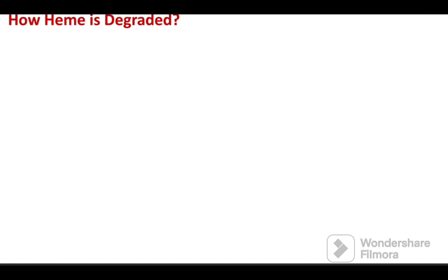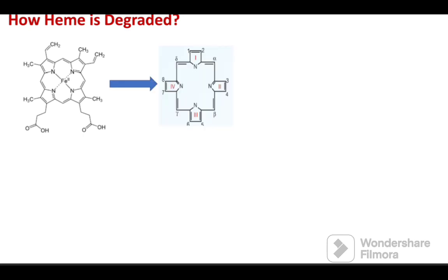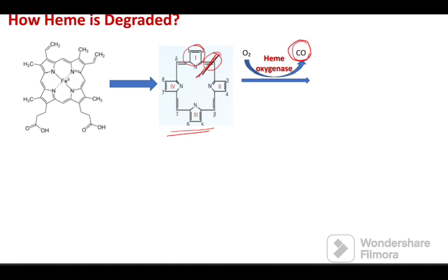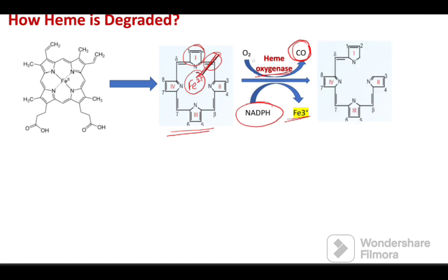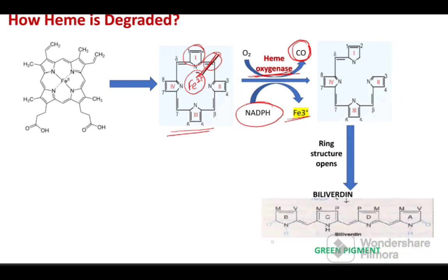Heme has a complex structure of an outer porphyrin ring and a center iron atom, consisting of pyrrole rings and methanol bridges. Firstly, there is cleavage of the alpha methanol bridge in the porphyrin ring by the heme oxygenase system. The carbon of the alpha methanol bridge is released as carbon monoxide, NADPH is required as cofactor, and the iron present at the center is released as Fe3+. Due to this cleavage, the porphyrin ring is opened to form a linear structure called biliverdin.